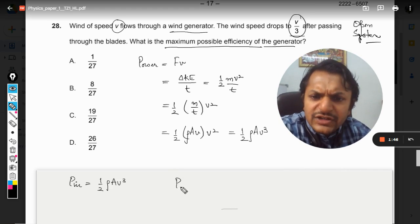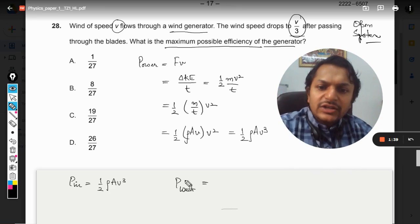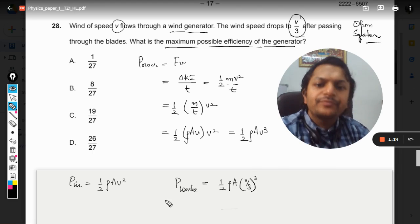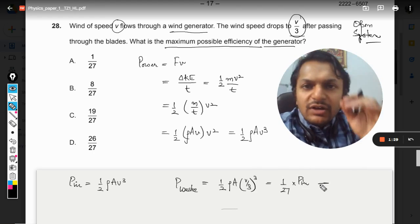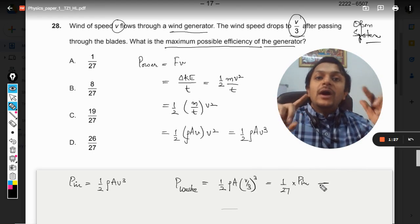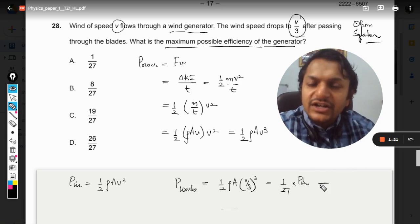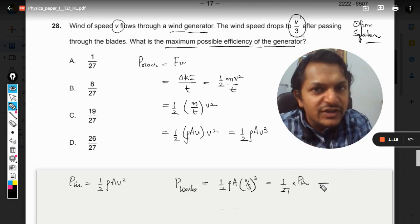I can say this is not power output - I have to say this is the power wasted that was not converted into electricity by the turbine. So it has to be (1/2)ρA(v/3)³, which equals (1/27) times the power input. So 1/27th amount of the total power is wasted, or the fluid has taken this power along with itself.